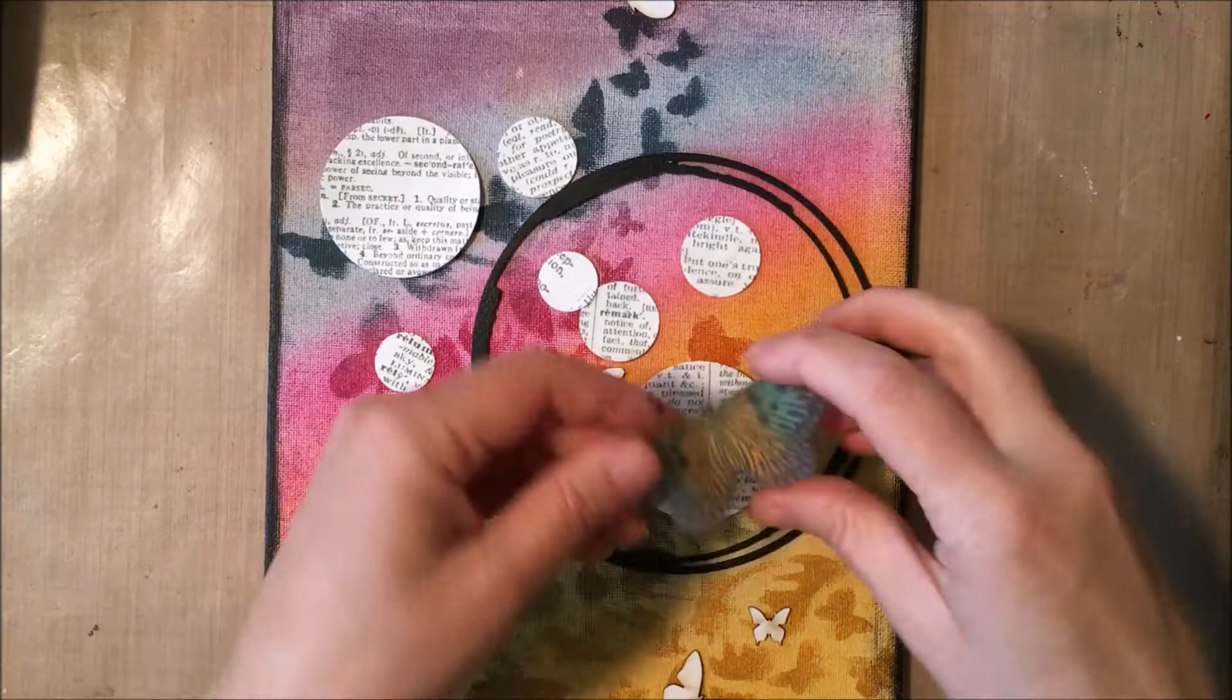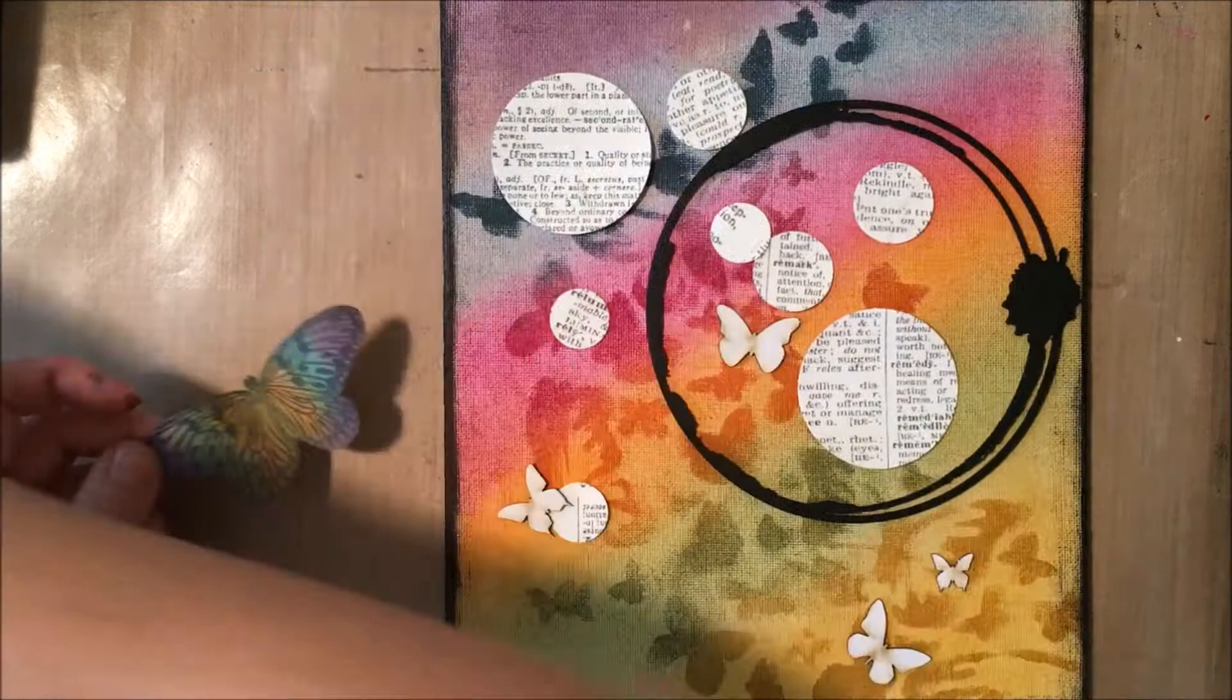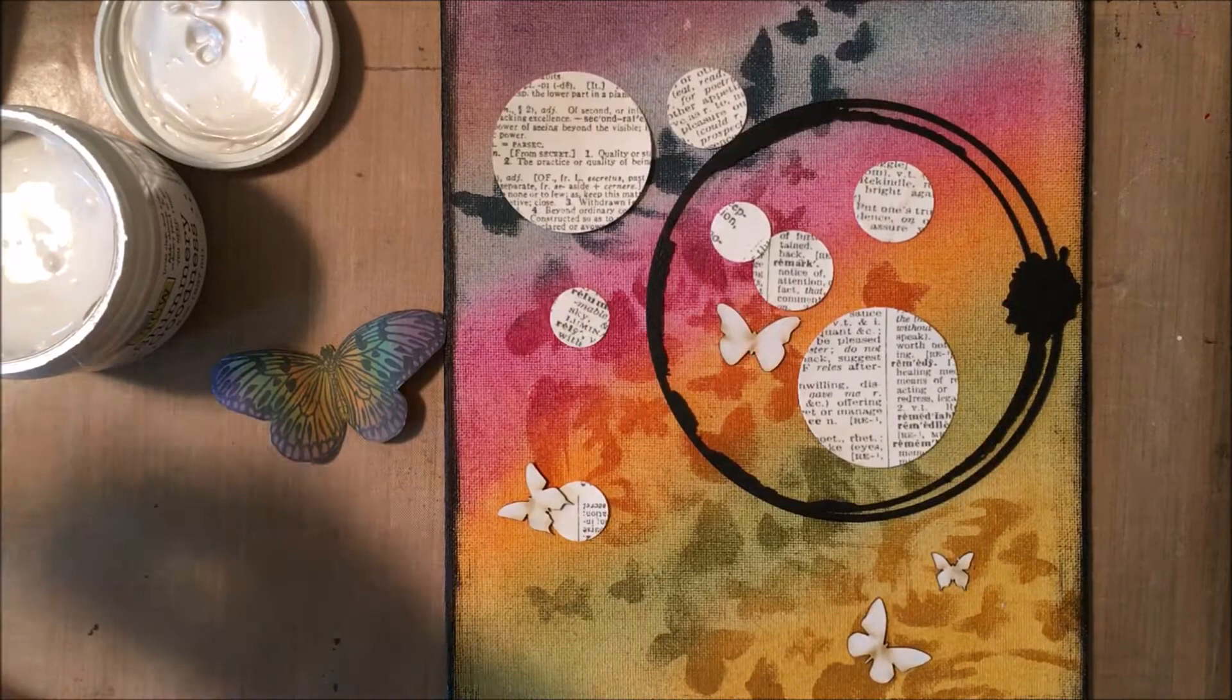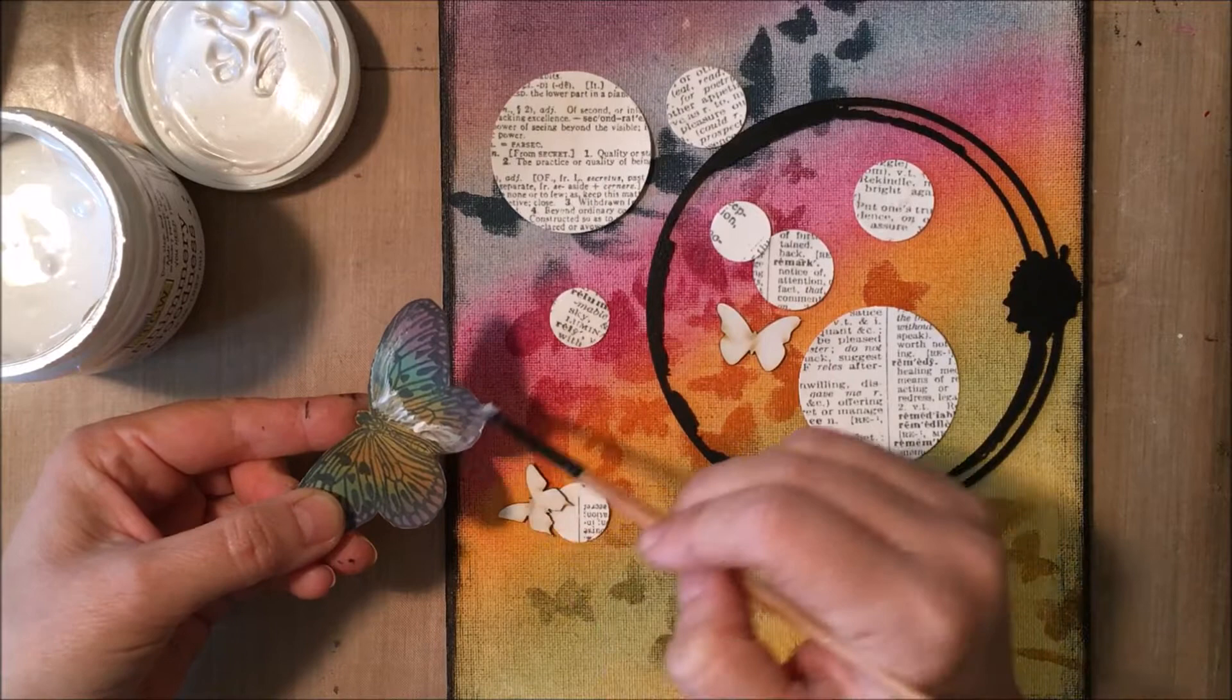So I've got a bunch of little bits here. I have this butterfly that I had. I have punched out some circles from text. I have some Wendy Vecchi matte mini butterflies. Kind of gathering just a bunch of items together that I want to use on my canvas.